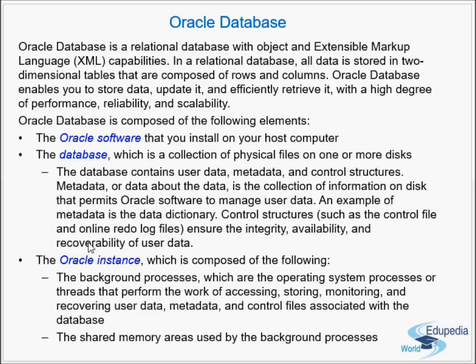In a relational database, all data is stored in two-dimensional tables that are composed of rows and columns. Oracle database enables you to store, update, and efficiently retrieve data with a high degree of performance, reliability, and scalability. The relational database stores all tables in two dimensions — we have rows and columns. This is the minimum information everybody should have in mind.